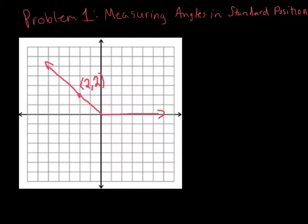For our first problem, we're going to find the measure of the angle from the initial side to the terminal side. This is a counter-clockwise motion, so it's a positive angle. We are given a coordinate: this point is (2, 2) and the terminal side goes through that point. From the x-axis to the y-axis is a 90-degree angle, so this angle is going to be greater than 90 degrees.